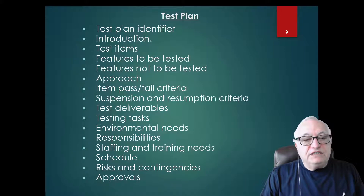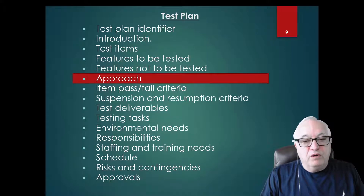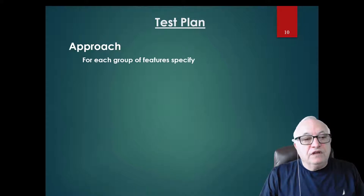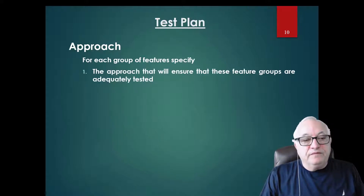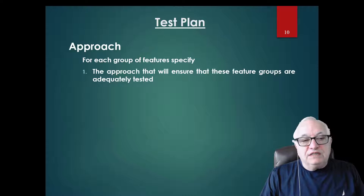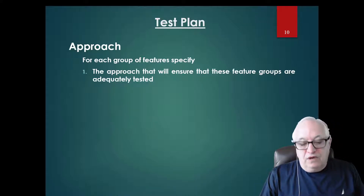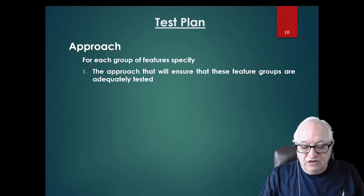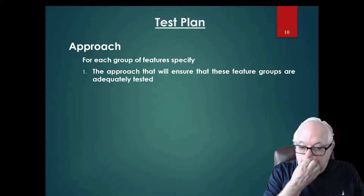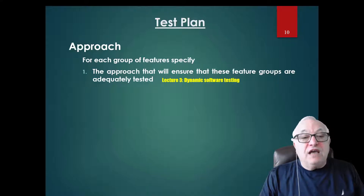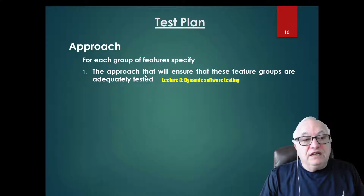The next section in your plan is the approach. For each group of features specified, you describe the approach that will ensure these feature groups are adequately tested. That's where you would talk about boundary conditions, equivalence classes, analyzing and testing state transitions, race conditions, and error guessing — everything we learned in lecture three.